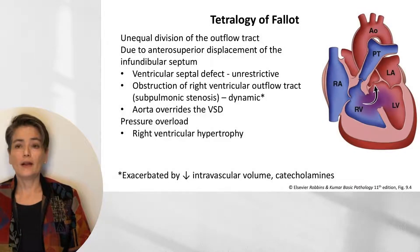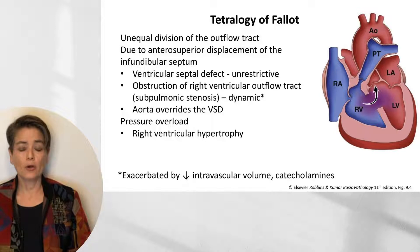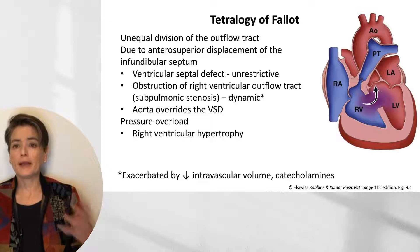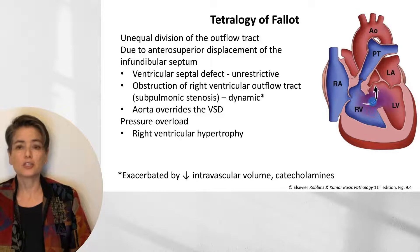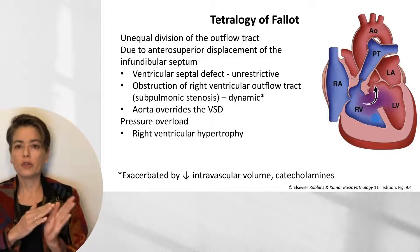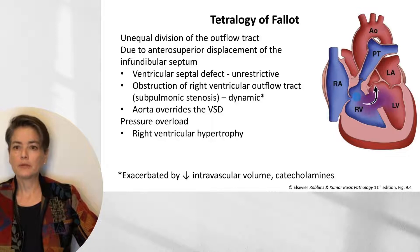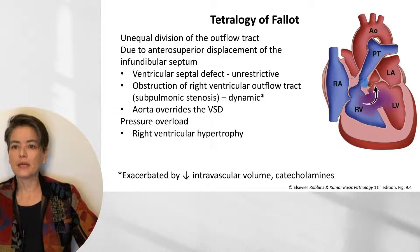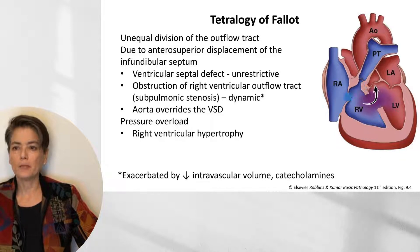Now let's turn to tetralogy of Fallot. Tetralogy of Fallot is due to unequal division of the outflow tract caused by anterosuperior displacement of the infundibular septum. We call it tetralogy because it has four components: a large (unrestrictive) ventricular septal defect with free flow of blood; obstruction of the right ventricular outflow tract due to subpulmonic stenosis — a dynamic stenosis that can be exacerbated by decreased intravascular volume or catecholamines; an overriding aorta above the ventricular septal defect; and right ventricular hypertrophy due to the increased resistance.